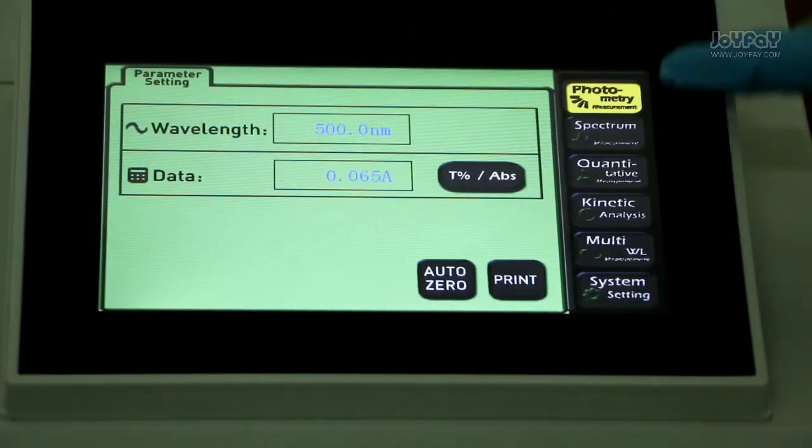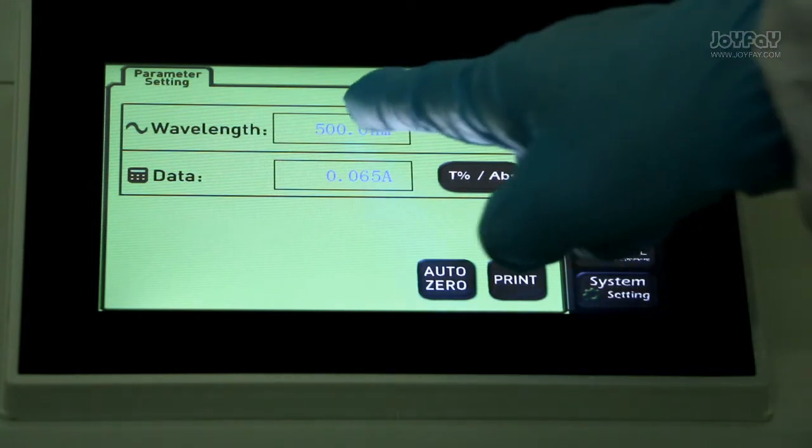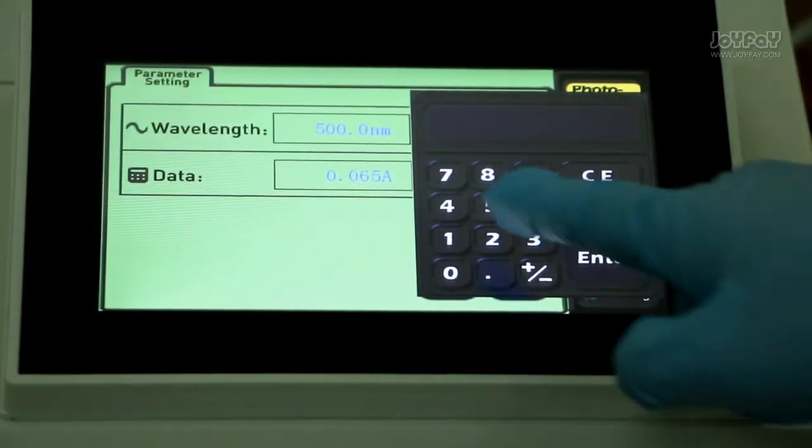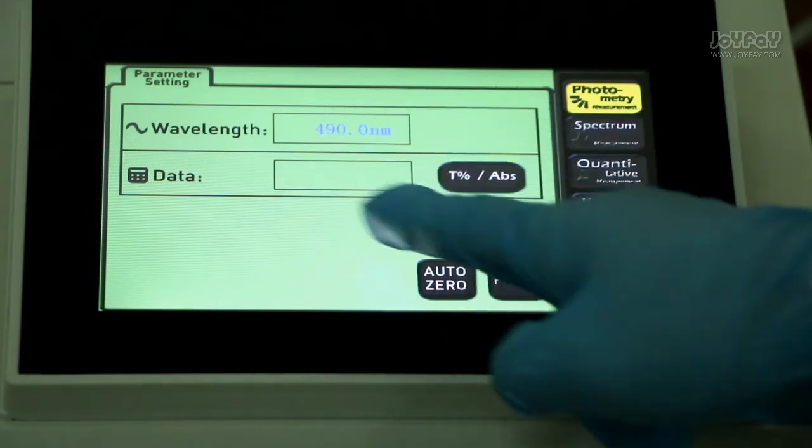Testing lamp. First measurement is photometry measurement, which is the easiest one. Press the blank box beside wavelengths. There is a keyboard popping out. Enter the wavelengths you know, and then you can see the data.